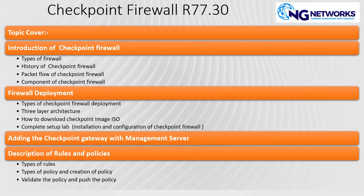We'll cover firewall deployment — standalone and distributed environments — and the three-layer architecture with its components. Then we'll look at downloading the ISO image: if you want to install the Check Point firewall, you need the image, and we'll show you how to download it from the website and what steps to follow.